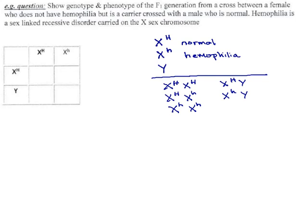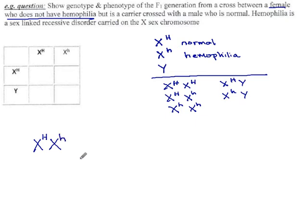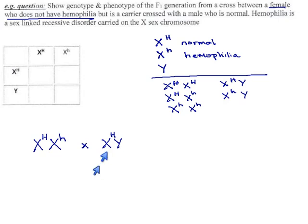Let's see what we have for our example. We're crossing a female who does not have hemophilia. If all they said was that, we'd say female, XX, and does not have hemophilia would mean big-H — but we wouldn't know what to put in the second spot; she could be a carrier or big-H / big-H. They tell us she is a carrier, so she's X-big-H / X-little-h. Crossed with a male who is normal — so X-big-H / Y. There's no such thing as a male carrier for this trait, because males only have one X chromosome. Either it will be normal and they're fine, or they'll have the hemophilia allele and they will show it. There's no way a recessive X chromosome can hide in a male — he's guaranteed to express it.